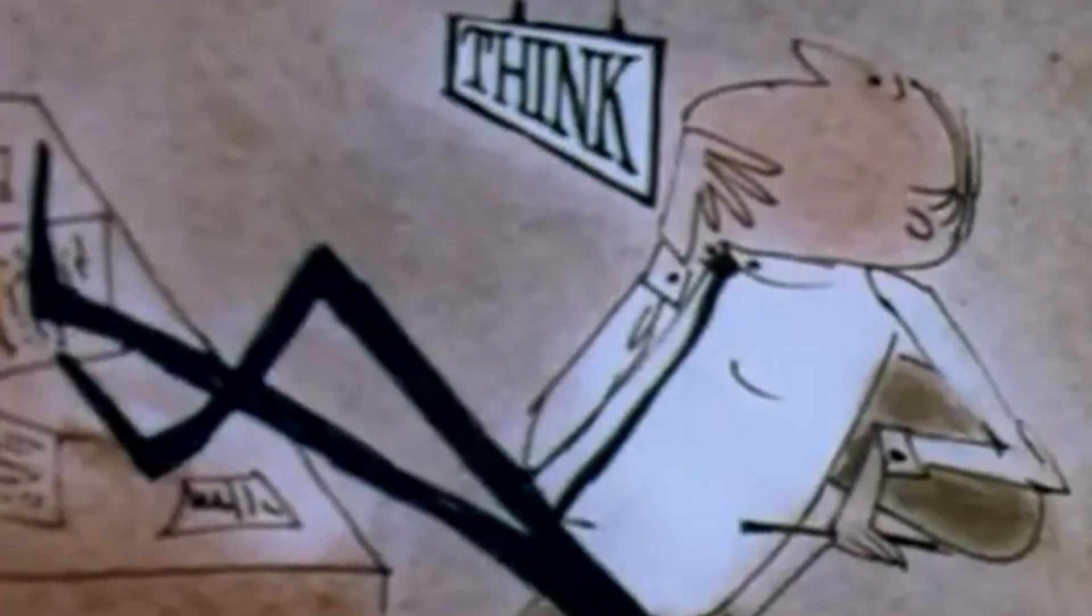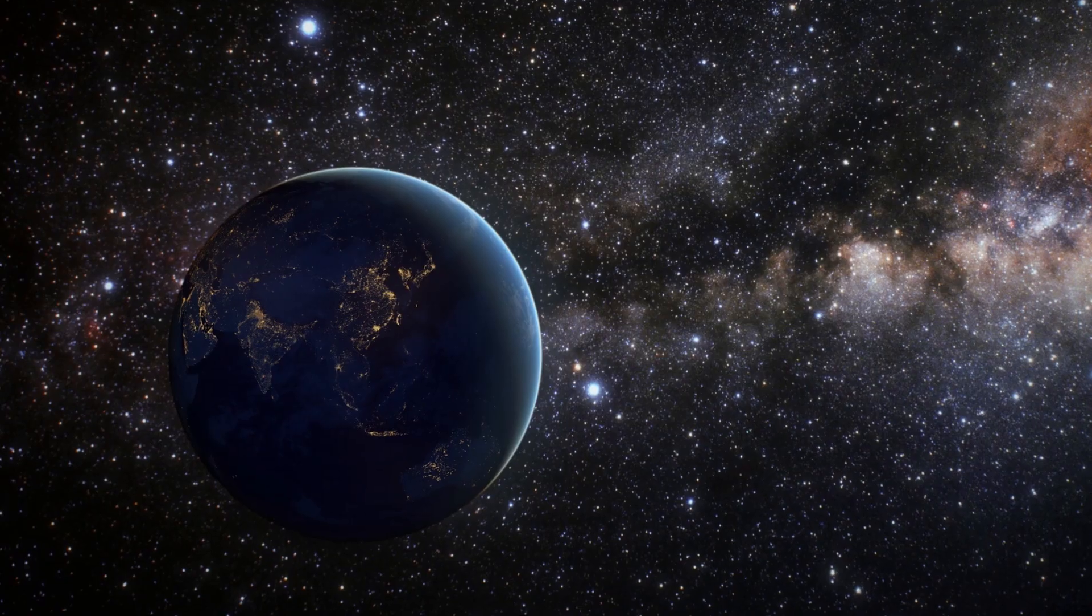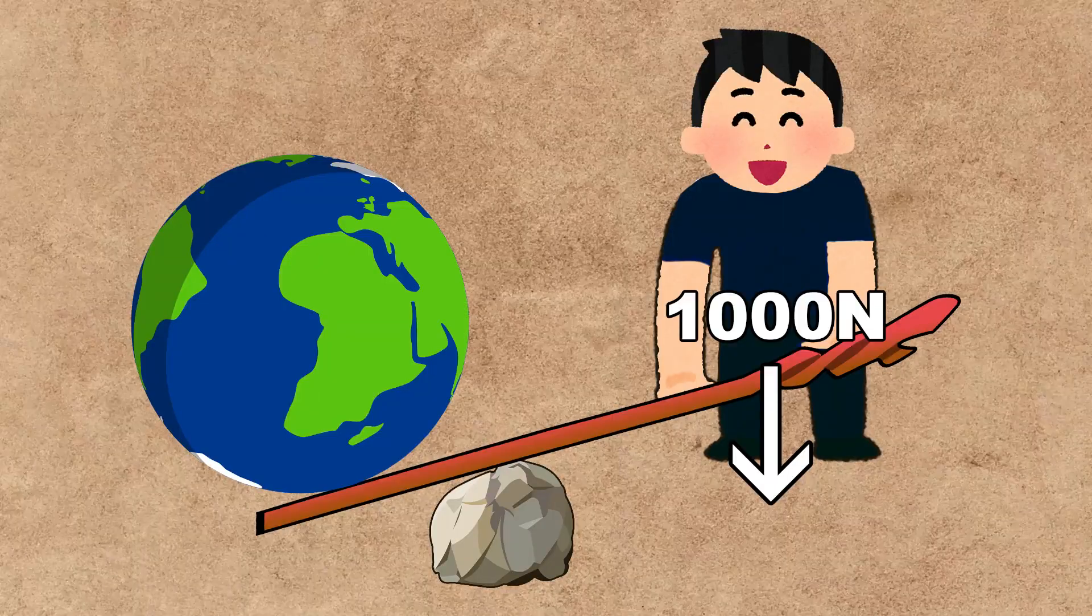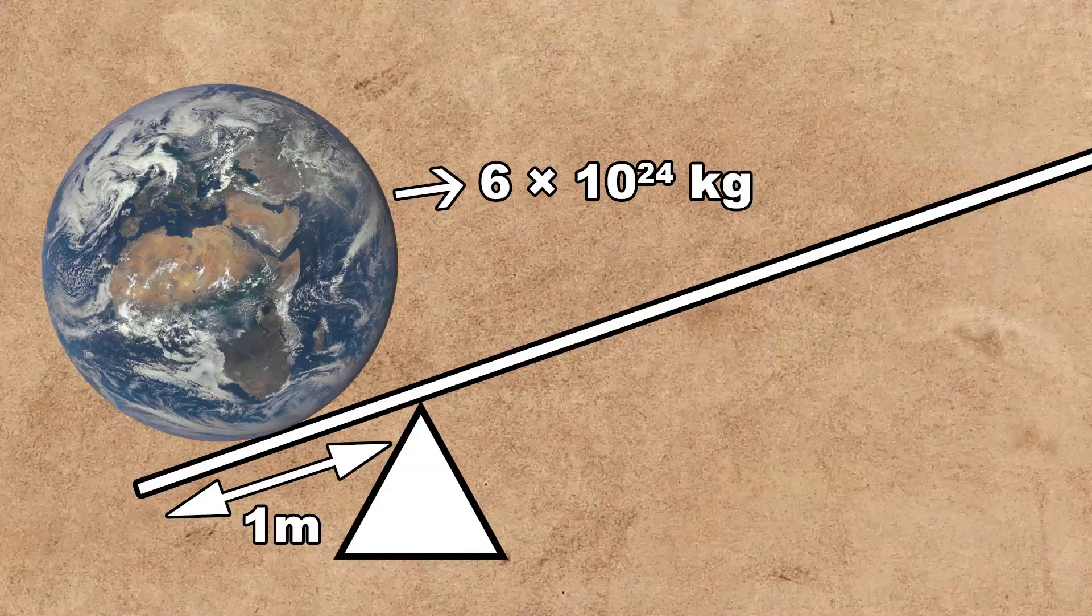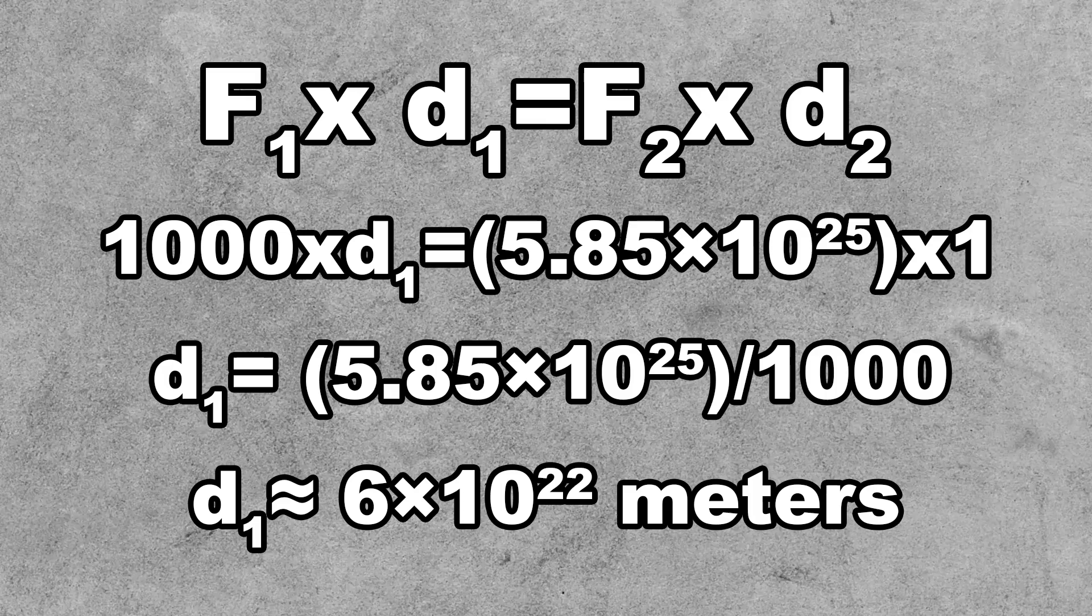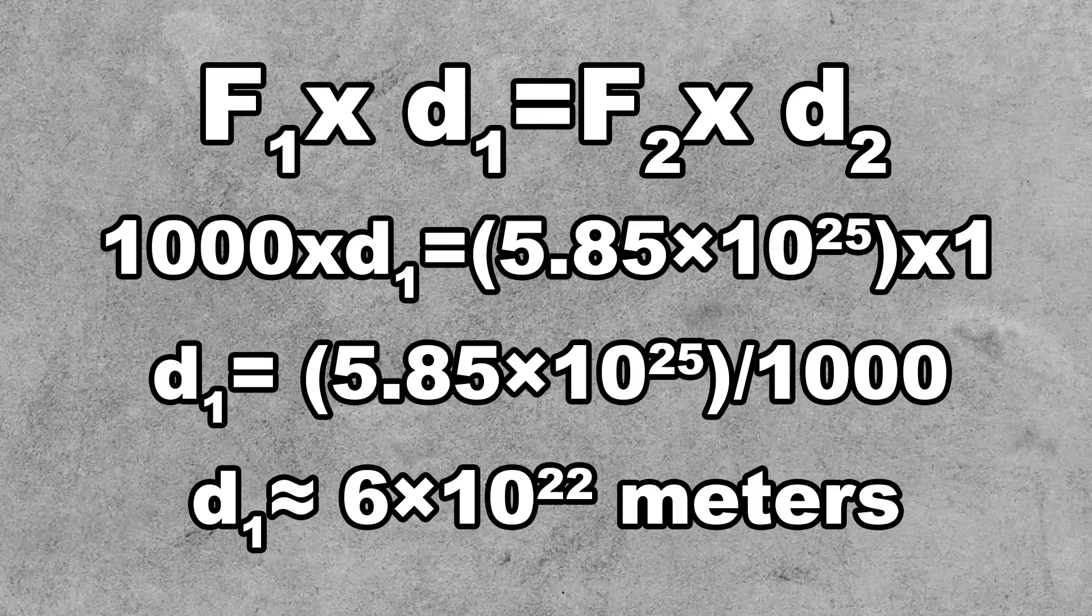So the question we ask ourselves, how long is the lever needed to lift planet Earth? Using the equation shown earlier with a person pushing down using 1000 Newtons of force and planet Earth being one meter away from the pivot point, we find that we need a lever about 6 times 10 to the 22nd meters long.